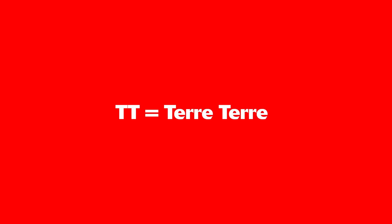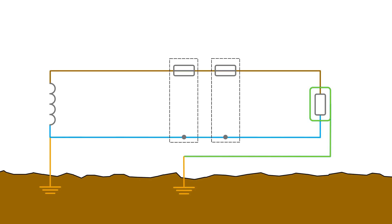The designation TT just indicates that the supply provider and the installation have their own connection to the literal earth connecting them together. Again we find ourselves in a position where in the event that a fault occurs and the line conductor comes into contact with say the metal casing of a load the path the current takes through the literal earth has a really high value and it may not be enough to cause an MCB to trip leaving us with a live metal part that someone could touch and get a shock from.